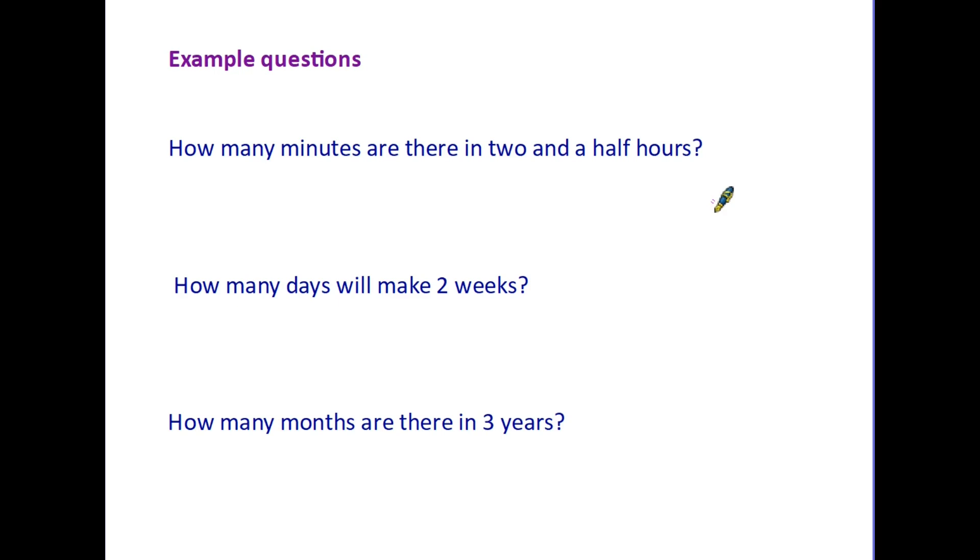The first one here is how many minutes are there in two and a half hours? Well, we already know that one hour is 60 minutes. So if one hour is 60 minutes, then two hours would be another 60 minutes. And then we know that a half hour is 30 minutes. So if we add those together, 6 plus 6 is 12, plus 3 is 15. So we have our answer: one hour, two hours, and a half an hour are 150 minutes.